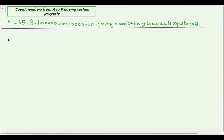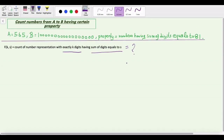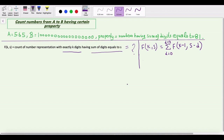First of all, let's understand how we can calculate the count of number representations with exactly k digits having sum of digits equal to s. We can simply get the count by using recursion, and the recursive equation will be this. The base case of this recursive function is: if k == 0, then we check if sum equals 0 — meaning we got a number with sum of digits equal to s — so we return 1, otherwise we return 0.